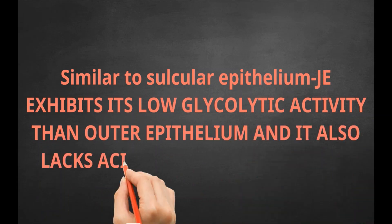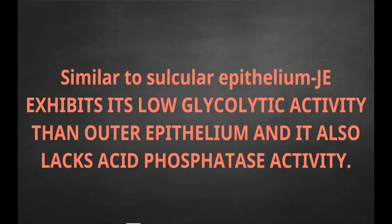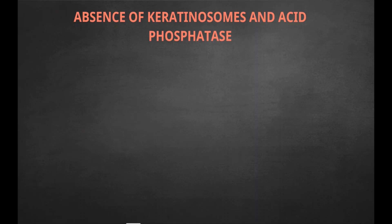Similar to sulcular epithelium, junctional epithelium exhibits low glycolytic activity compared to outer epithelium and also lacks acid phosphatase activity. Absence of keratinosomes and acid phosphatase correlates with low degree of differentiation and may result in low defense power against microbial plaque accumulation in the sulcus.